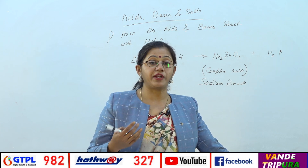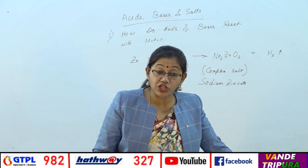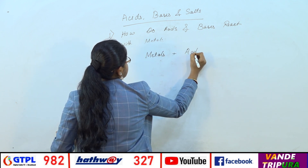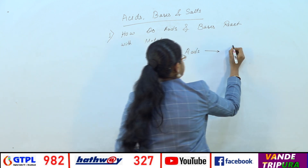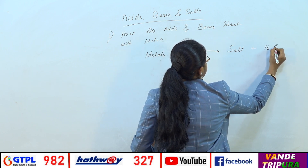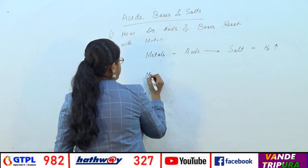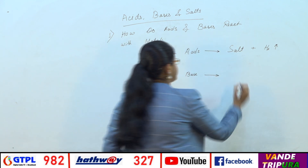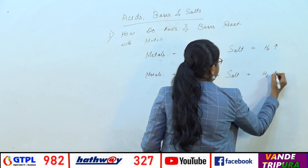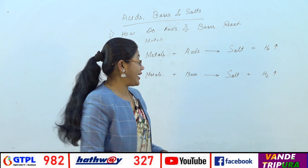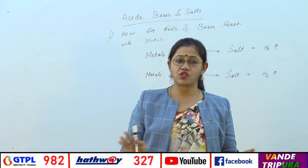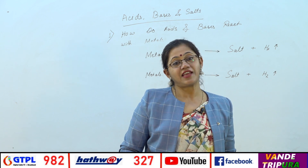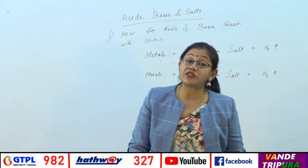To conclude: metals react with acids to produce a salt and H2 gas. Metals also react with bases to produce a salt and H2 gas. The presence of H2 gas can be proved using the pop sound test. Now moving on to the next topic: how do metal carbonates and metal bicarbonates react with acids?